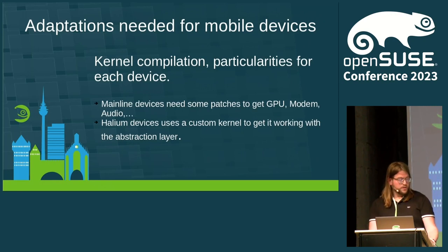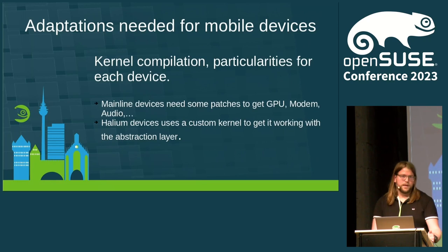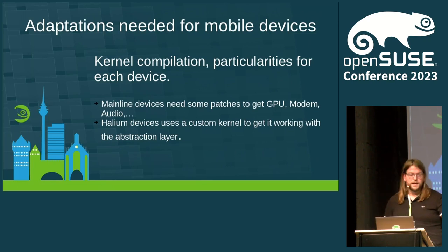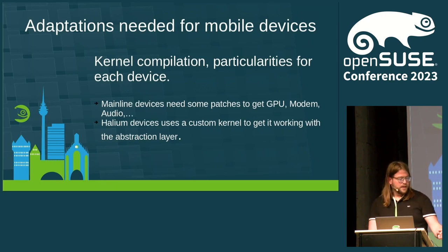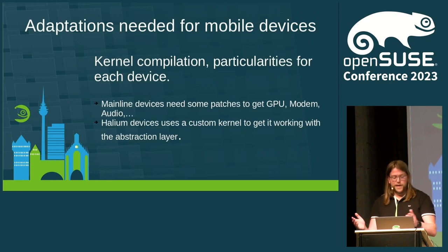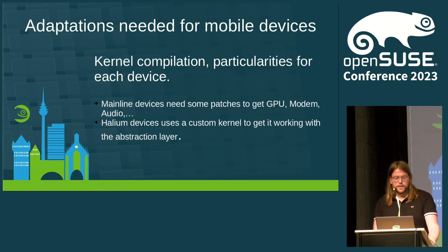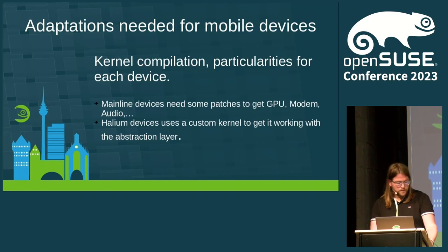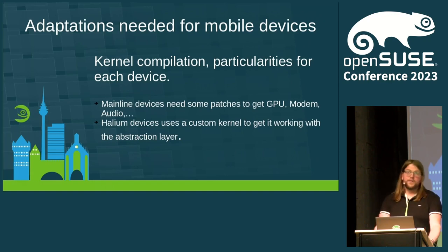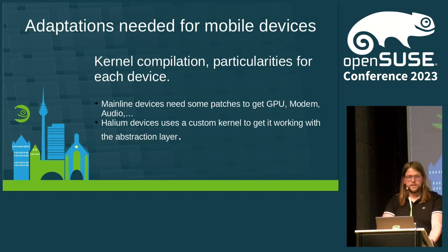We have three types of devices here on the table. One is a mainline kernel phone, which is the PinePhone — it's like a Raspberry Pi, you can burn an SD card and start the phone, just that easy. Then we have Halium-based devices, which use an Android kernel with an abstraction layer to talk with the operating system — in this case the Volla phone, made by a German company. And then we have the OnePlus 6 and 6T, which are Android phones running a mainline kernel, meaning not all functionalities are working.